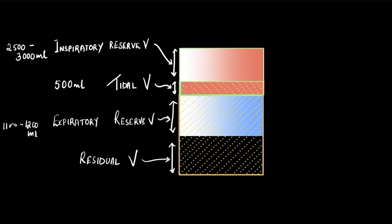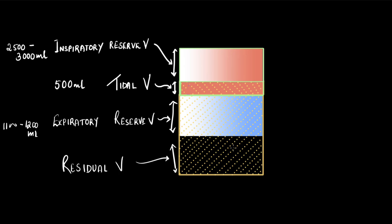So to summarize: residual volume (RV) is the air that can never be removed from the lungs; expiratory reserve volume (ERV) is the air forcefully exhaled out; tidal volume (TV) is the normal air that comes in and goes out during regular breathing; and inspiratory reserve volume (IRV) is the additional air taken in during forceful inhalation.